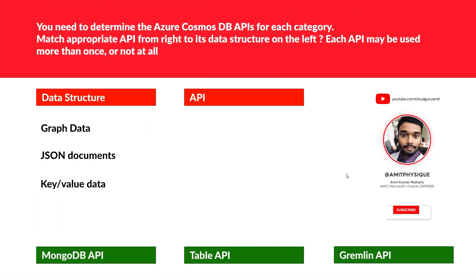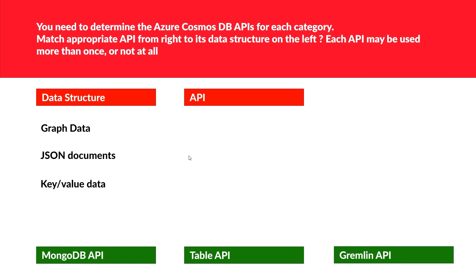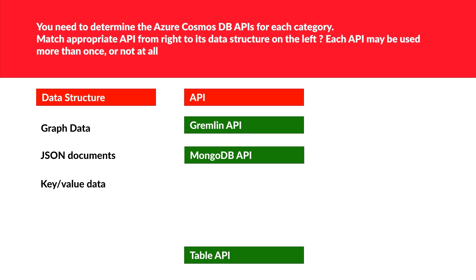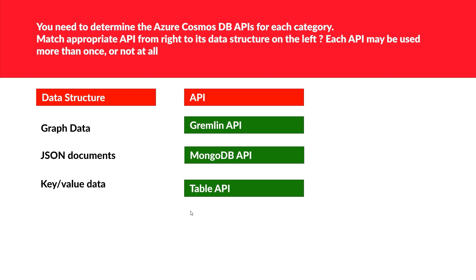This match-the-following pairs data structures with APIs. Graph data maps to Gremlin API — think nodes and relations. JSON documents map to MongoDB API, as MongoDB belongs to the semi-structured document category. That leaves key-value data paired with the table API. These are the correct options, and this concept is very important for the DP-900 exam.